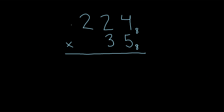Let's try another example: 224 times 35 in octal. We start with the 5. What is 5 times 4? That's 20. Since we got a value that's 8 or greater, we ask how many eights go into 20.